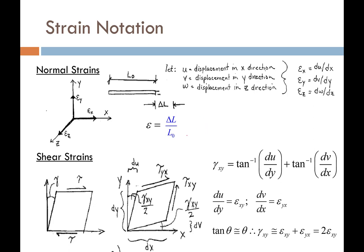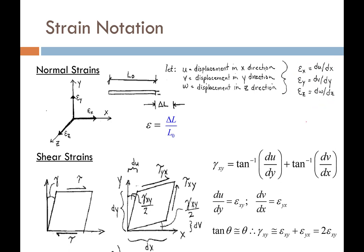In terms of displacement notation, u is the displacement in the x-axis, v is the displacement in the y-axis, and w is the displacement in the z-axis. Going back to our original cube and taking the original dimensions of each side, we can say that my strain in the x-axis is equal to du divided by dx, my strain in y is dv divided by dy, and my strain in the z-direction is dw divided by dz. This is for normal strains.